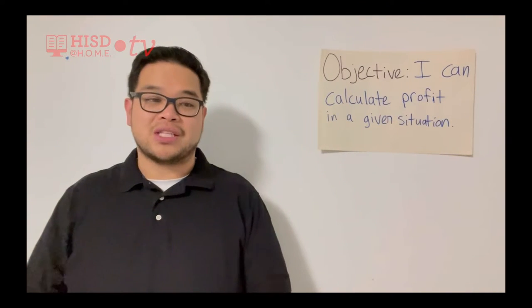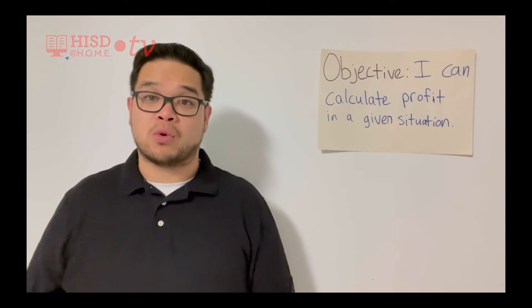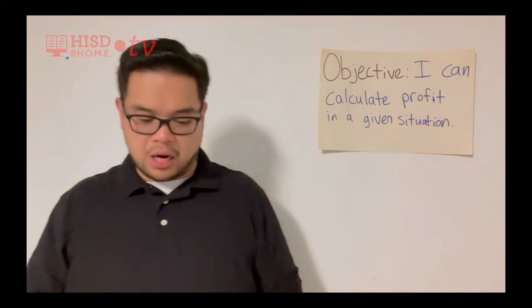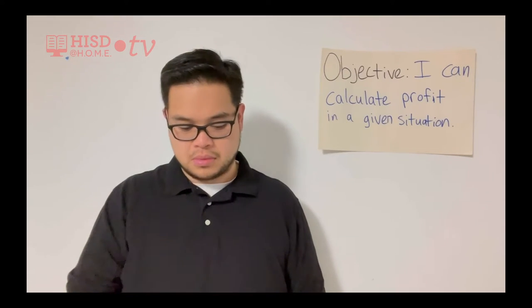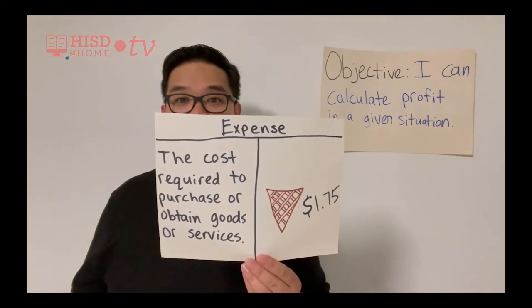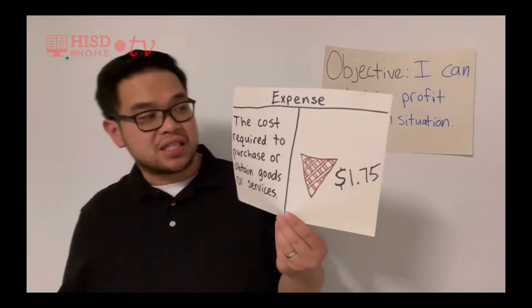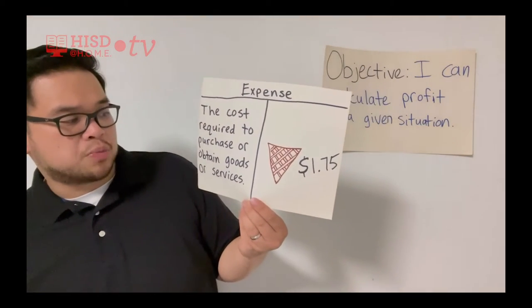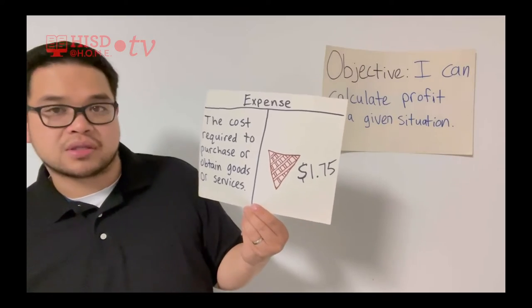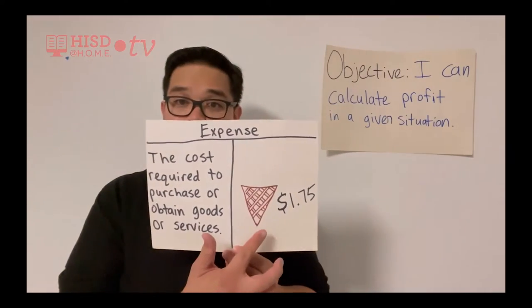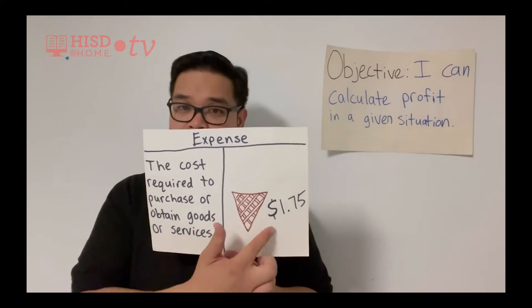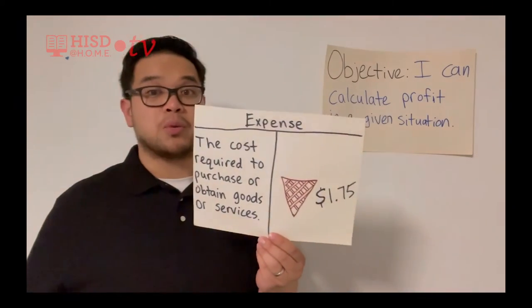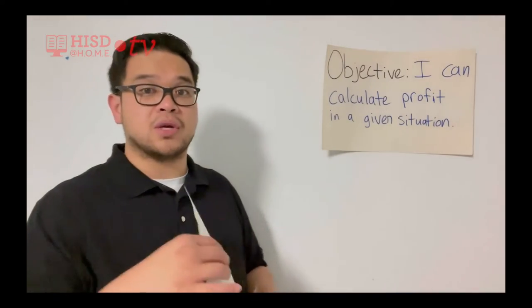Let's go ahead and go over some vocabulary words that will help us through our lesson today. Our first word is expense. It is the cost required to purchase or obtain goods or services. So this cone is $1.75 — we will purchase this waffle cone for $1.75. That is an expense. You're purchasing something with your money, so it's an expense.